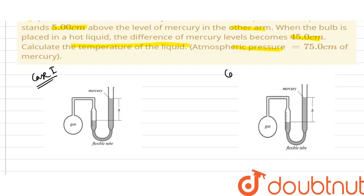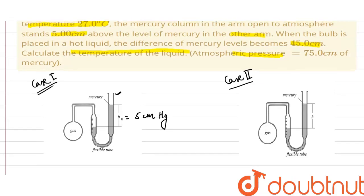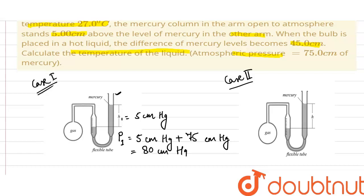In case one, the rise in mercury level h1 is equal to 5 centimeters of mercury. This end of the manometer is open to the atmosphere, so the pressure here would be the rise in mercury level plus the atmospheric pressure, which is 75 centimeters of mercury. So P1 comes out to be 80 centimeters of mercury.